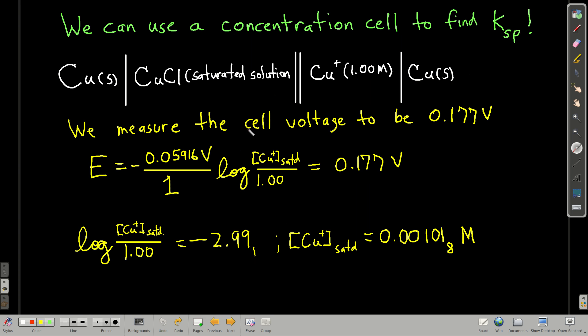So we can also use a concentration cell to find Ksp. So let's look at this, a different galvanic cell. In the anode, we have a copper electrode. And in the cell, there's a saturated solution of copper 1 chloride. There's the salt bridge or the porous plug. In the other cell, we have copper 1 at one molar, like copper 1 nitrate or something really soluble. And we also have a copper electrode at the cathode, for the cathode electrode.